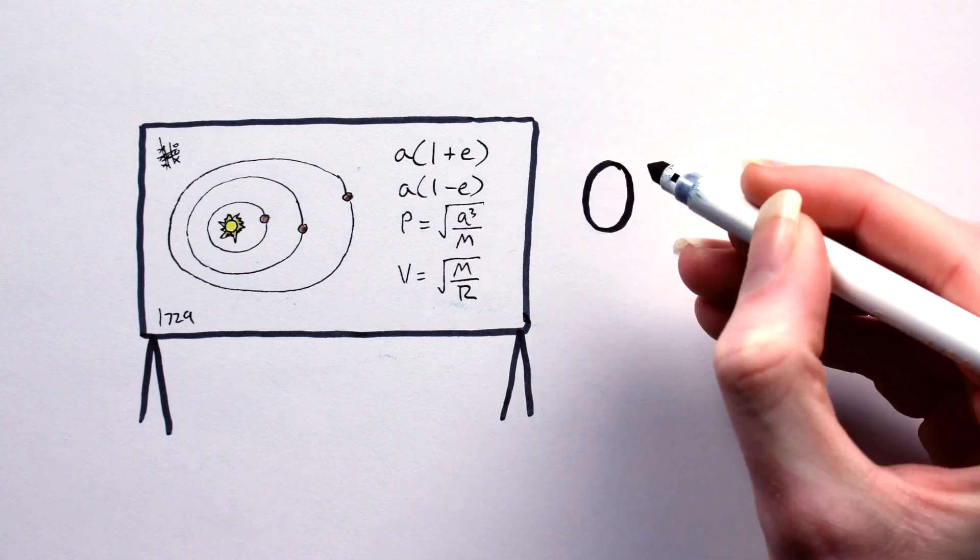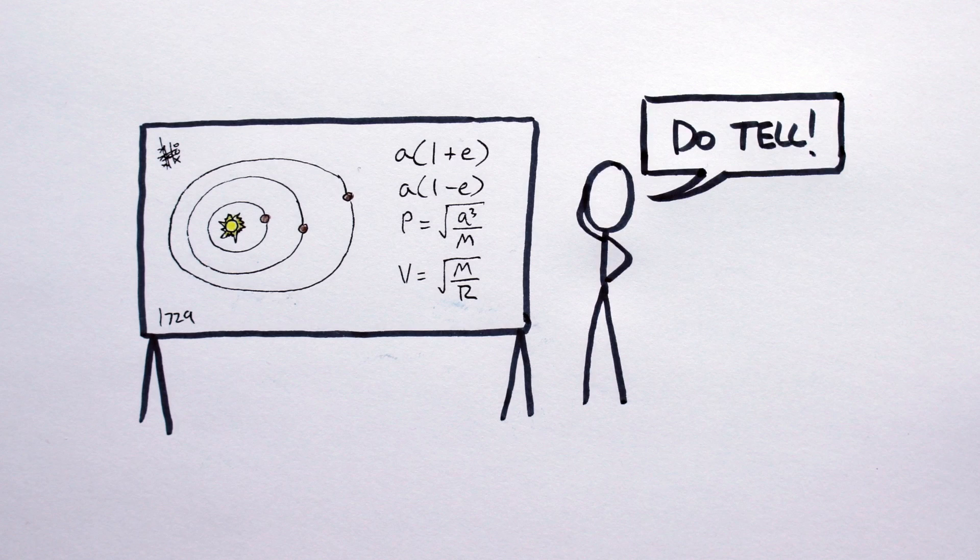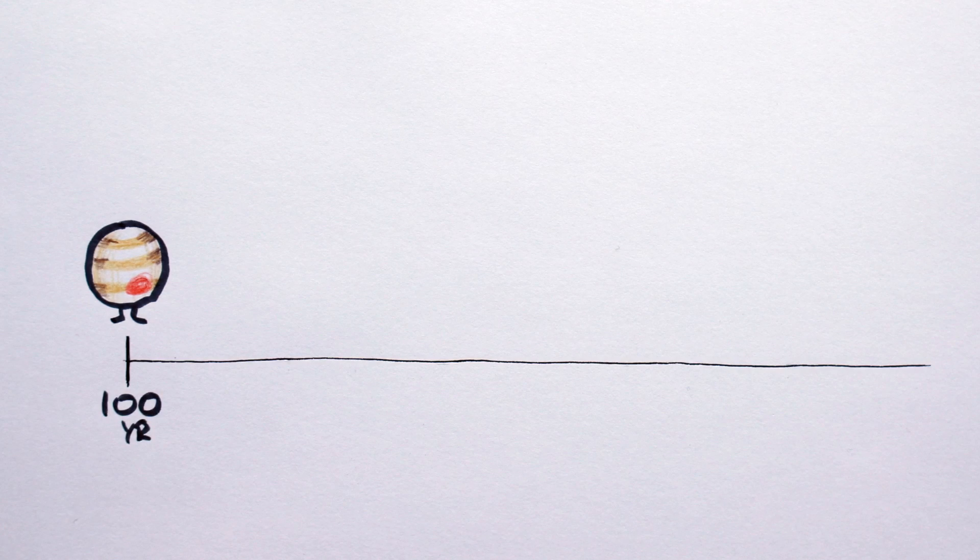But what does this all mean for worldbuilding fictional systems? Let's make a plan of a fictional Kuiper Belt. Begin by noting the orbital period of the last gas giant in your system. Your resonant dwarf planets will be in resonance with this object. For convenience sake, I'll say this guy here has a 100 year orbital period. Next up, map out the resonances.